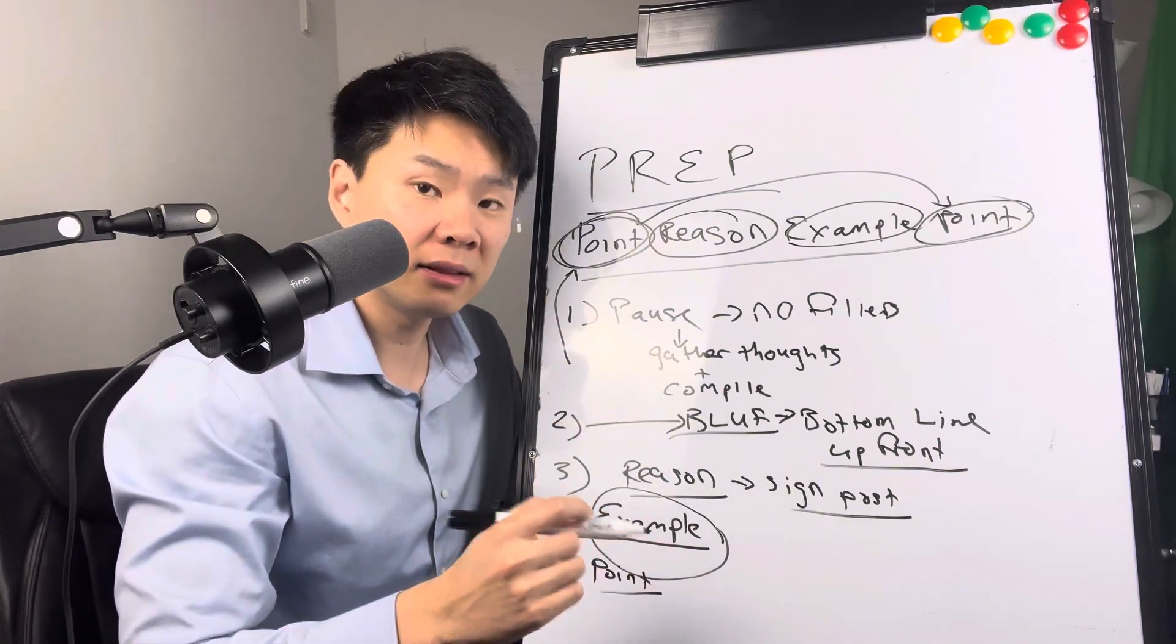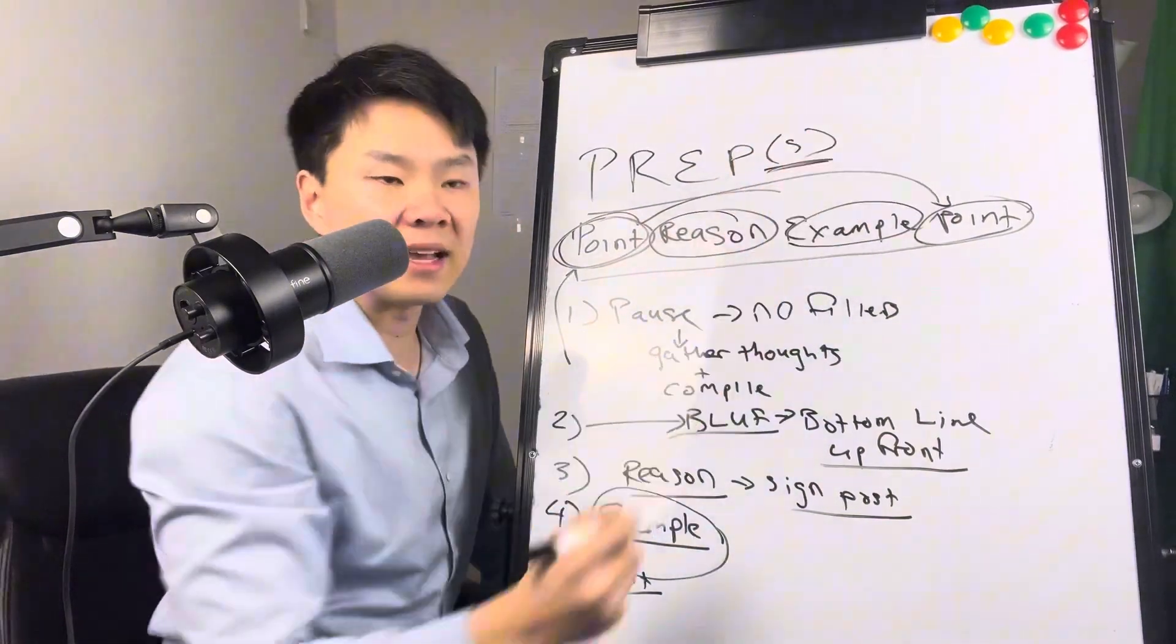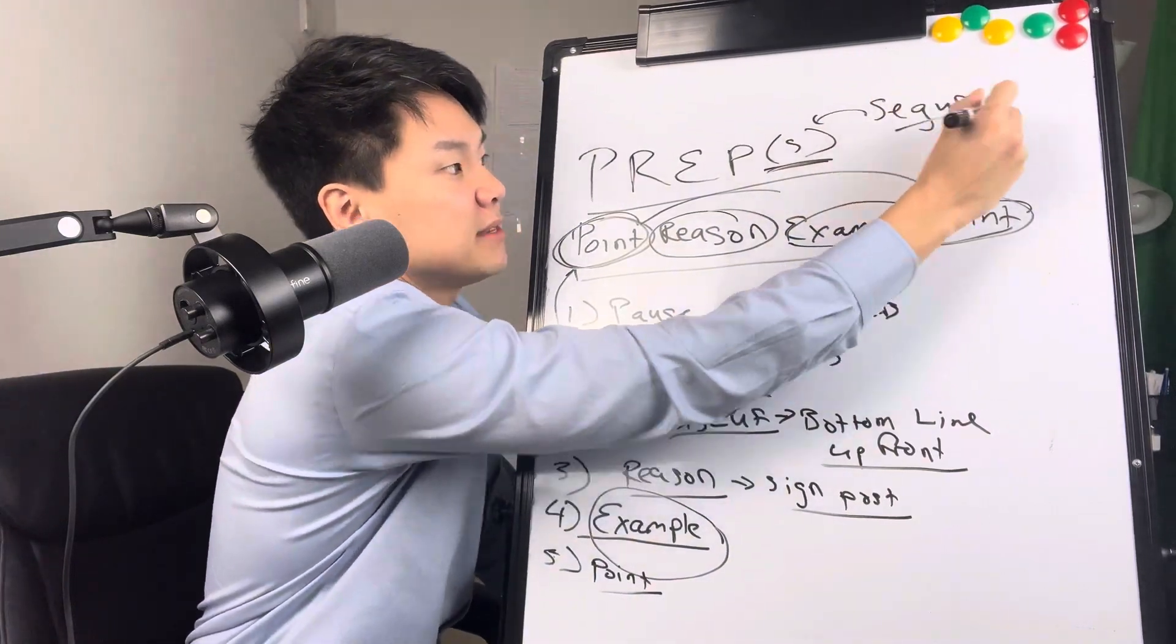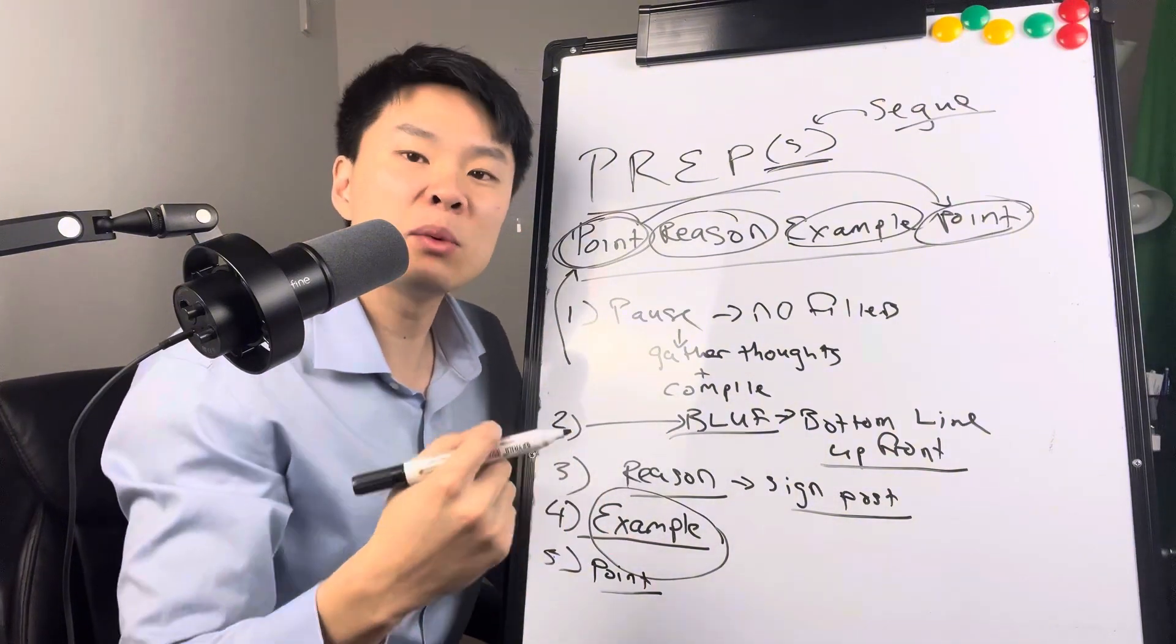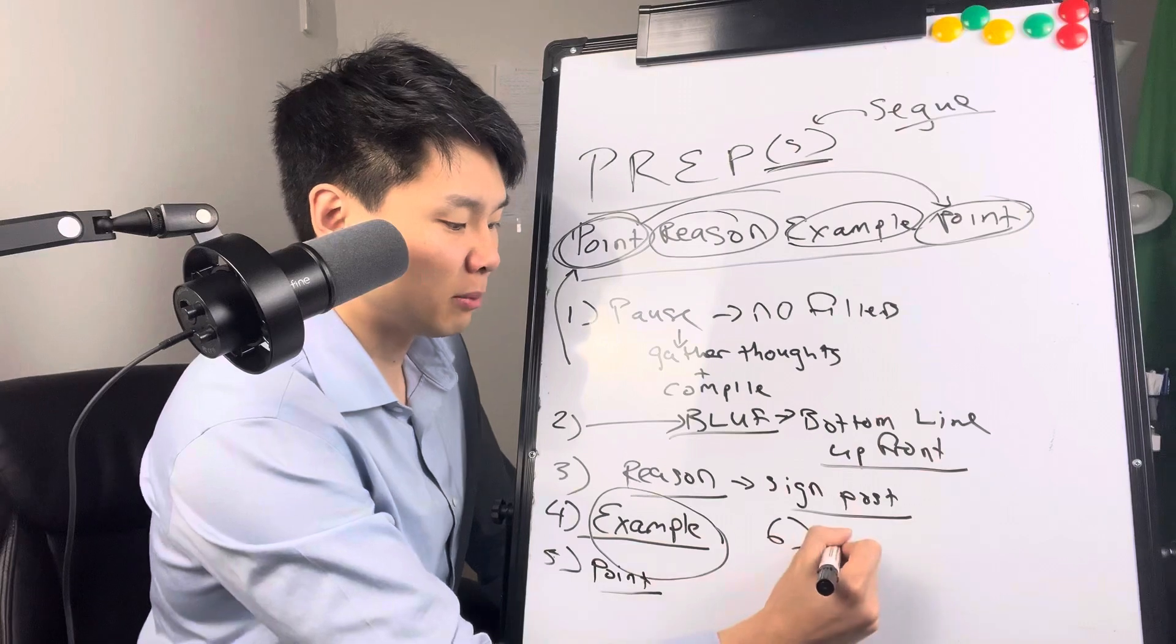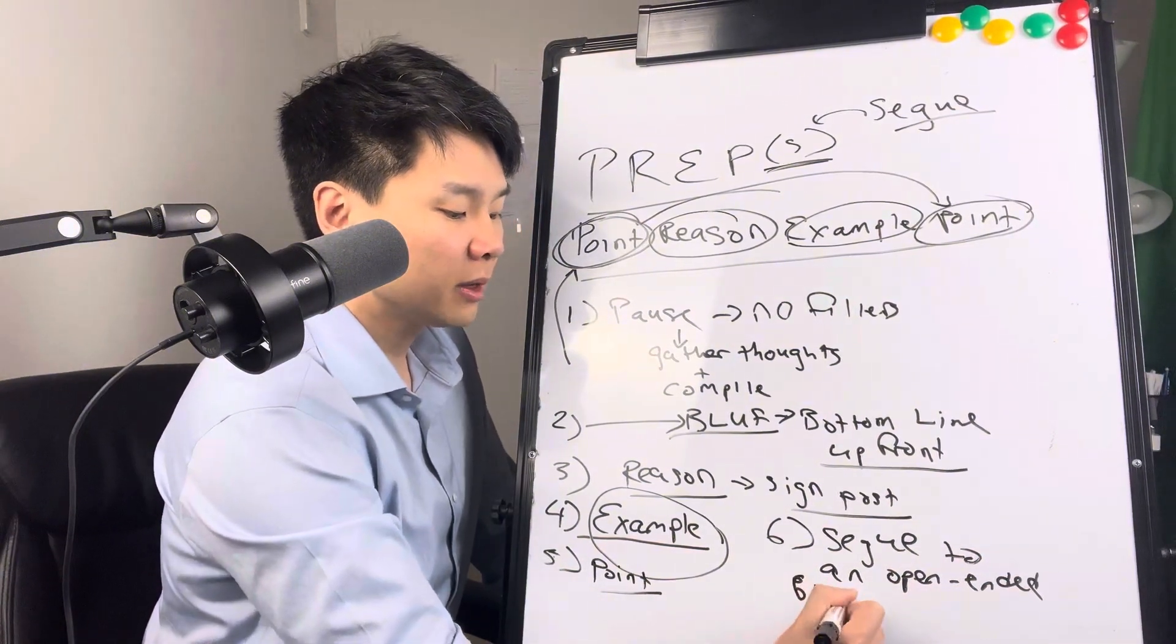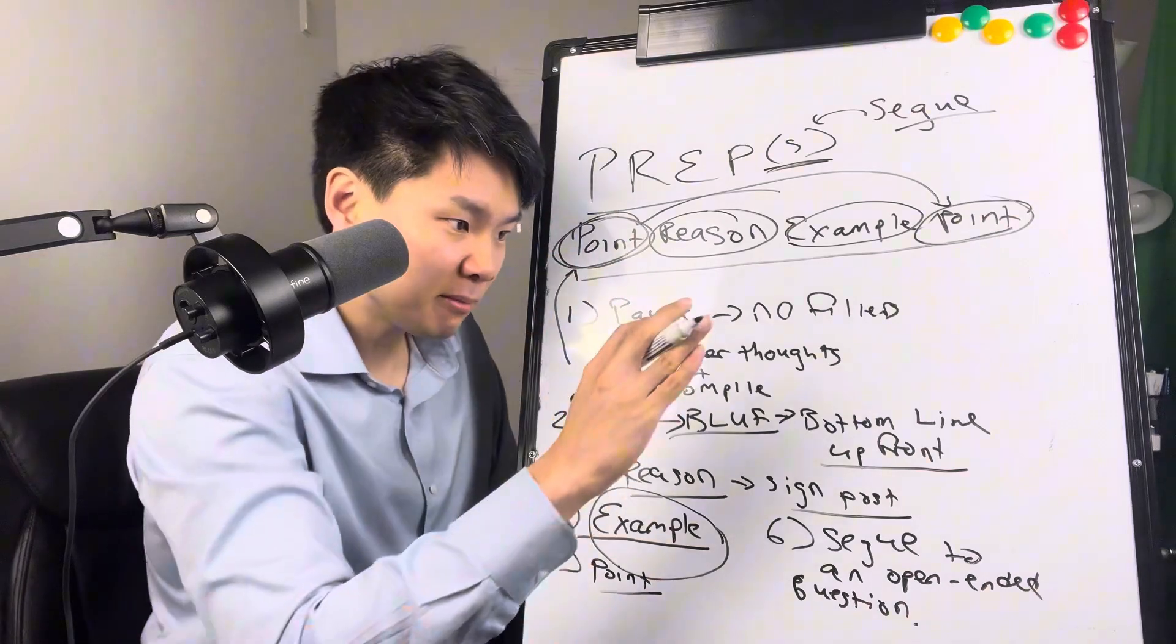But what you're doing is that you're making that sink in with that executive, your audience. Now, once you've done all of that, the question becomes, what do you say next? Well, what is a key part of this framework is the S. And this is something that not everyone does, but it goes from helping you go from good to great. And this stands for segue. You want to either segue to a new topic, or, and especially when you're speaking with executives, you want to segue to an open-ended question. Instead of asking, do you have any questions, that solicits a yes or no answer. The conversation ends.